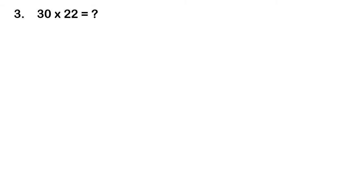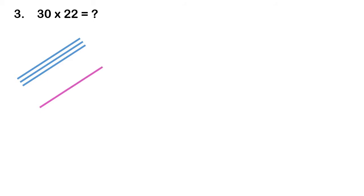The third question is 30 multiplied by 22. In the first problem we did 2-digit numbers without zero, but this number contains a 0, so listen carefully. Draw 3 lines for the first digit. For the zero digit, you might think we should not draw a line, but that is incorrect — we must draw 1 line even for a 0 digit. The pink line indicates the zero line. Then draw 2 lines, and another 2 lines for the second number.